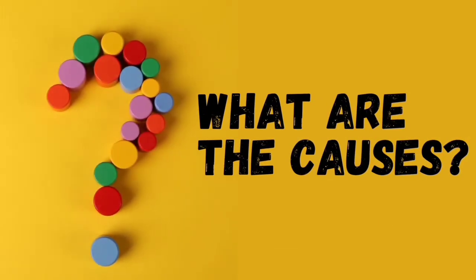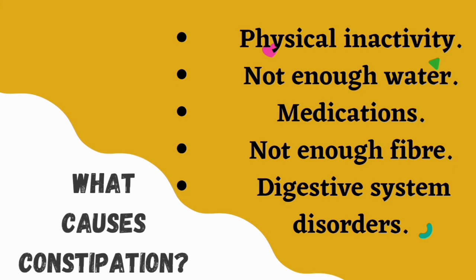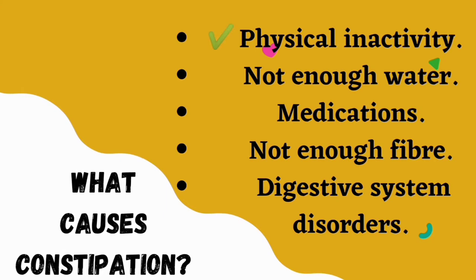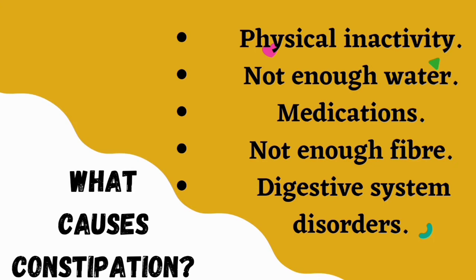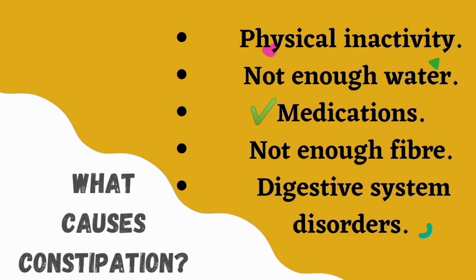The causes of constipation may range from severe underlying medical conditions to physical inactivity. Physical activity increases muscle activity in your intestines and helps speed up movement so stool moves faster — even a 10 to 15 minute walk will help. Other causes include not taking enough water, which leads to dehydration and worsens the situation. Medications such as morphine, a painkiller, and certain blood pressure medications can also cause constipation as a side effect.